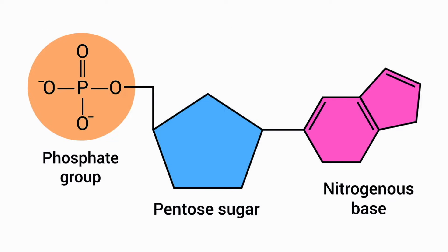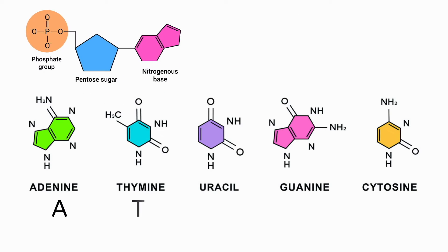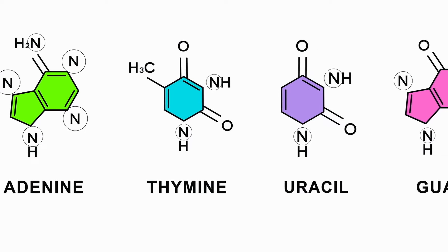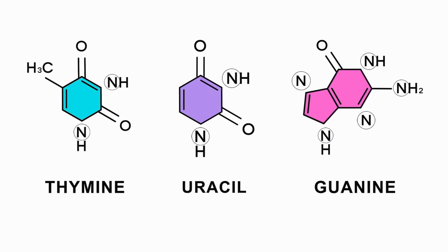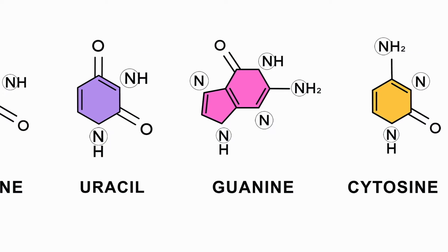Before we look at how nucleotides go together to make DNA and RNA, let's look at the structure of a single nucleotide. All nucleotides have a phosphate group and a sugar. Attached to the sugar is the nitrogenous base that determines which nucleotide it is — A, T, U, G, and C. The nitrogenous base will be one of these five structures. And why do we call it the nitrogenous base? Let's zoom in on those bases. In addition to carbon, hydrogen, and oxygen, they all have at least two nitrogens.